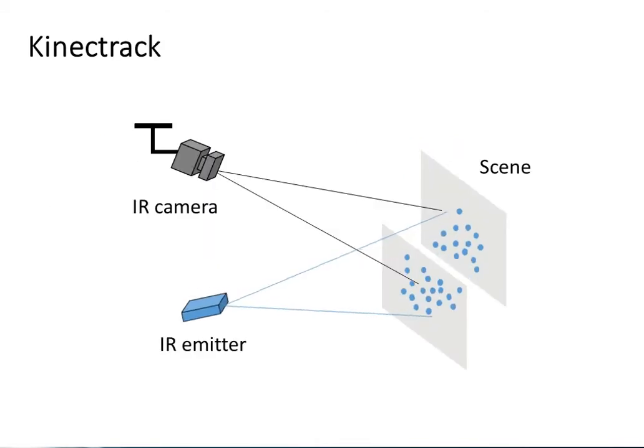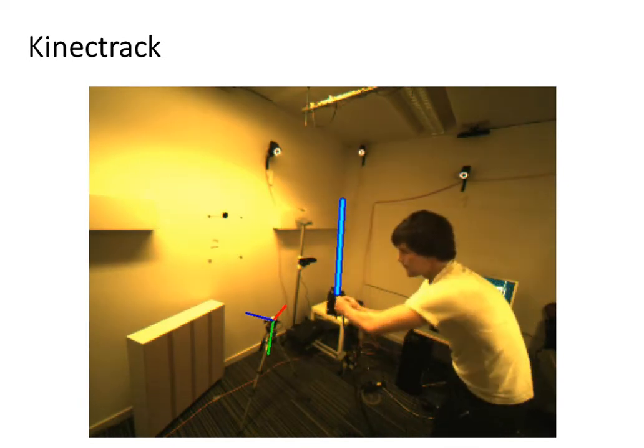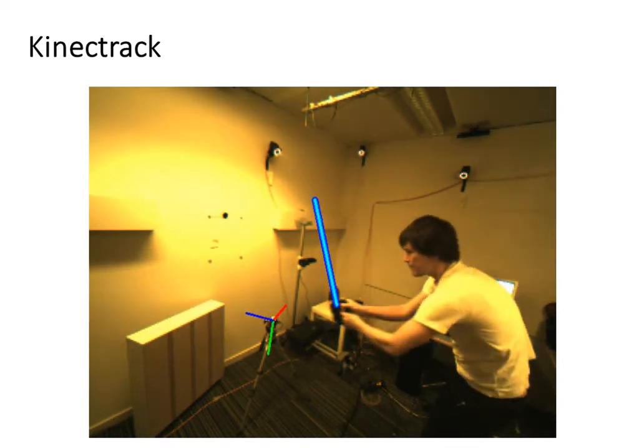The pose of the roaming emitter is estimated by observing the projected dot pattern in the fixed camera view. The unknown scene structure is simultaneously recovered. The method provides a low-cost solution for tracking applications using a compact device with simple electronics.